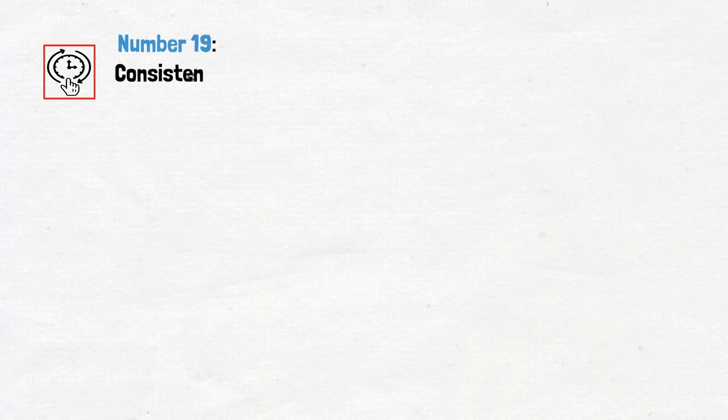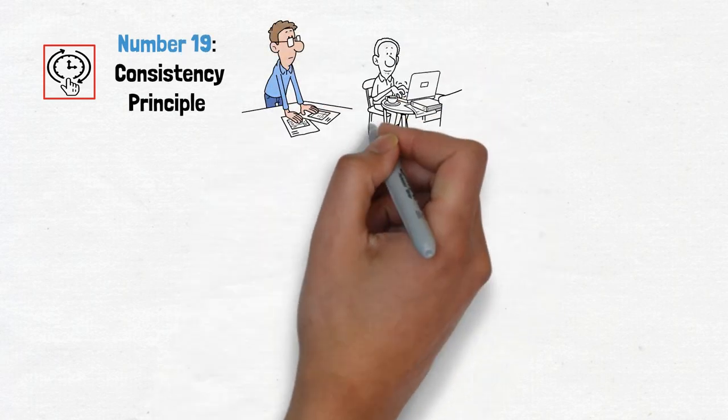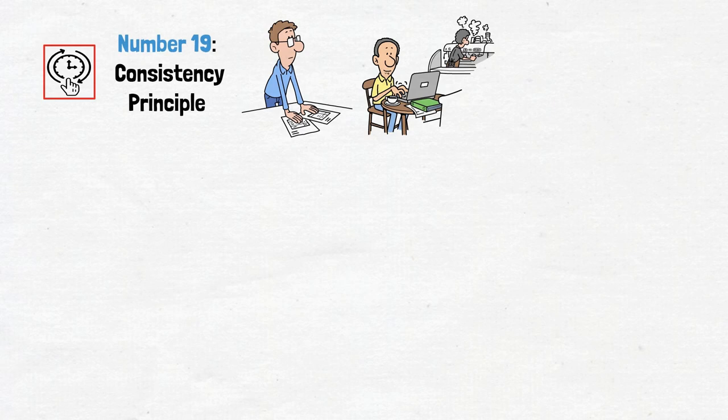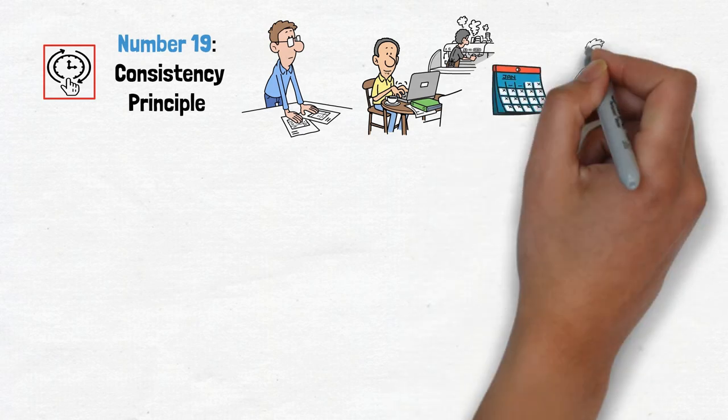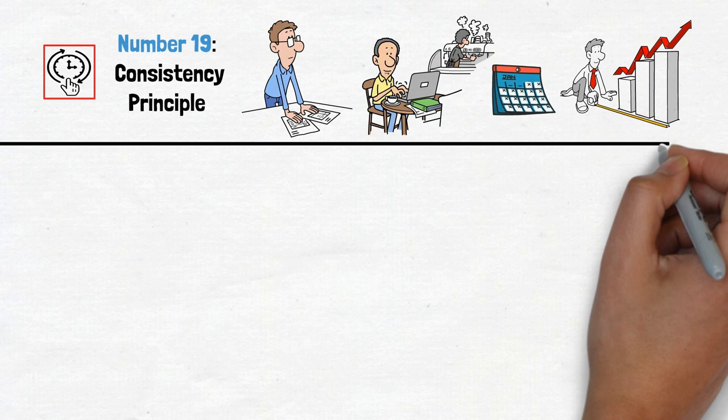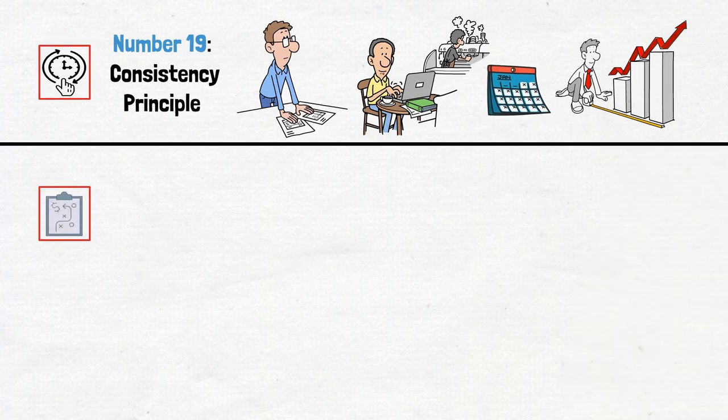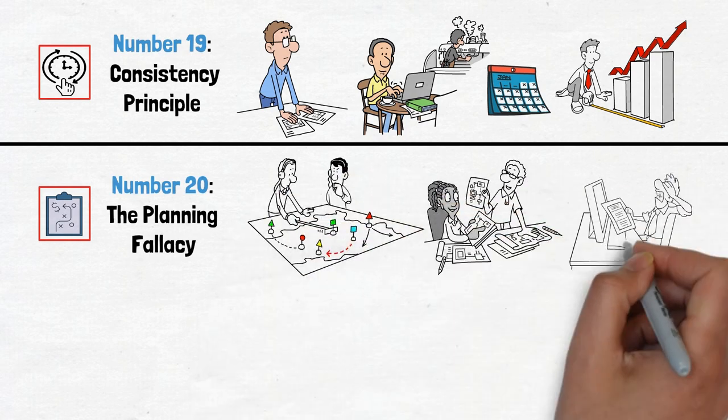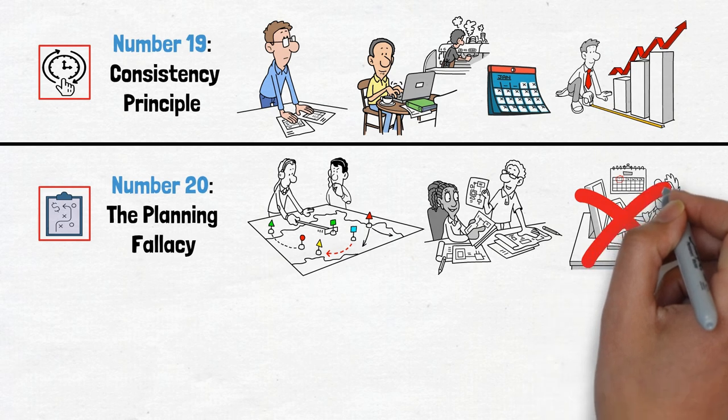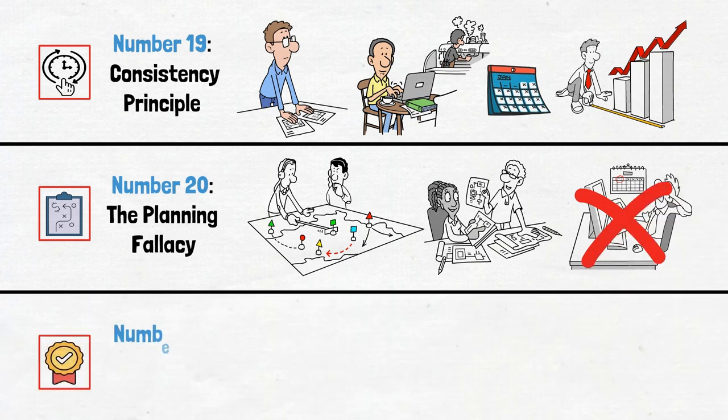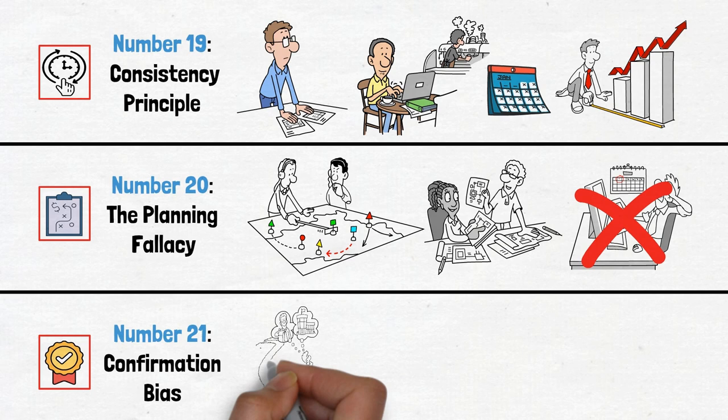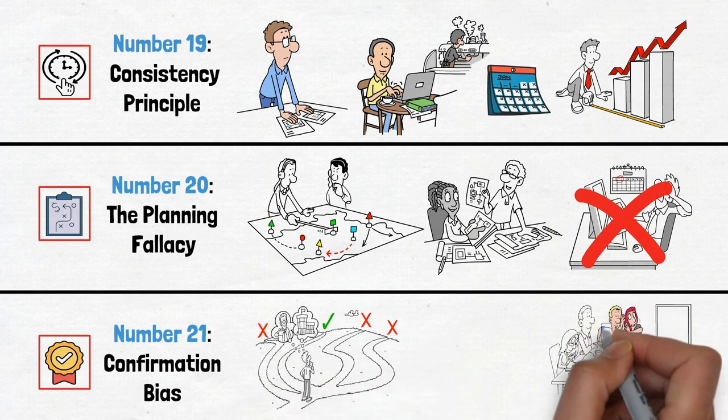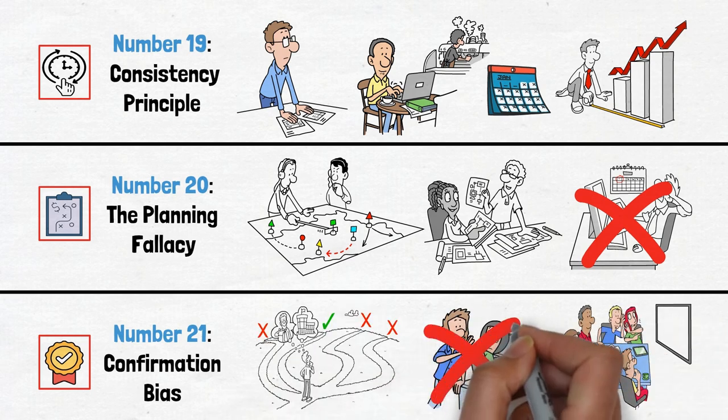Number 19, consistency principle. Stay true to your commitments and watch your goals become reality. Consistency is key to success. Number 20, the planning fallacy. Plan for the unexpected and give yourself some leeway. Don't underestimate the time it takes to accomplish your tasks. Number 21, confirmation bias. Seek out diverse perspectives and challenge your own beliefs. Don't let confirmation bias cloud your judgment.